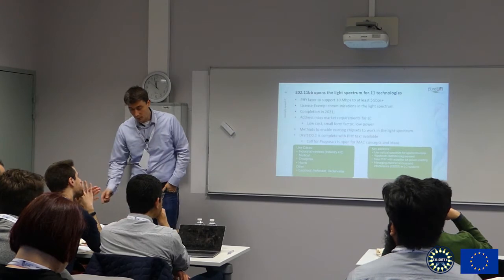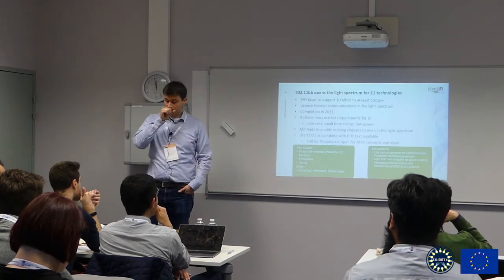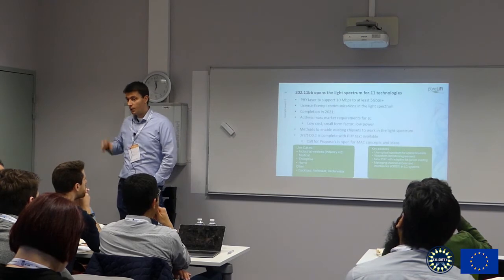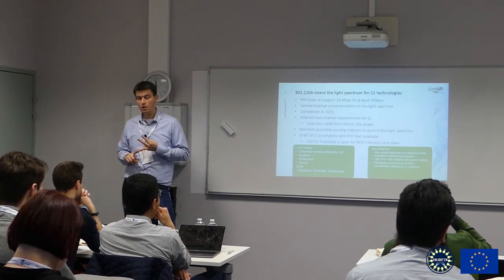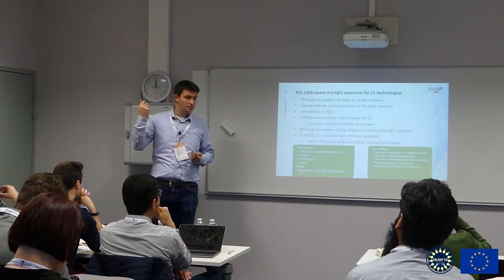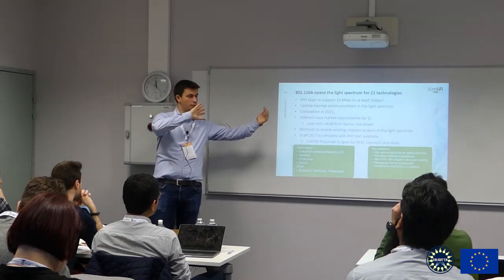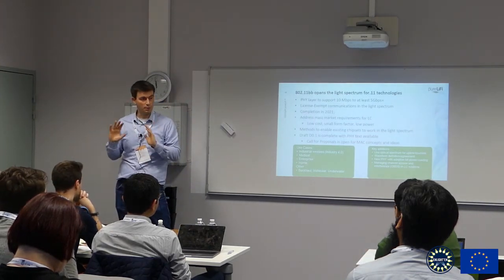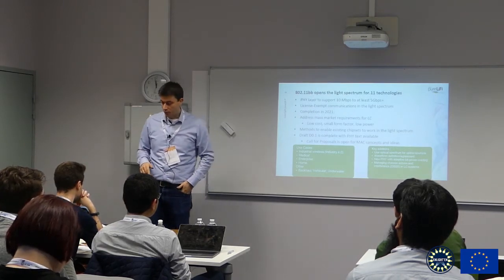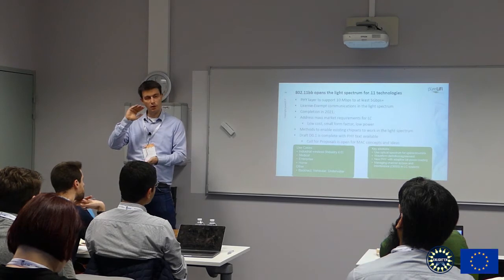Then we have 802.11BB, which is the group I chair within .11. It's looking at 10 megabits up to 5 gigabit per second, license-exempt communications. We're trying to complete in 2021. It's really targeted at low-cost, small form factor, low-power devices. It is meant to create the framework — to establish a method that takes Wi-Fi chipsets and makes them as easily applicable to light as possible. Draft D0.1 is done. We've gone through some PHY proposals. The next stage is the MAC, where we have relatively limited scope for changing things.